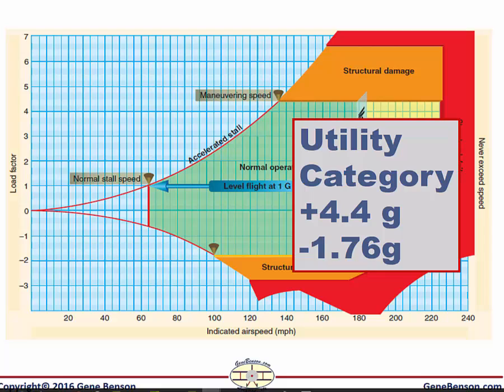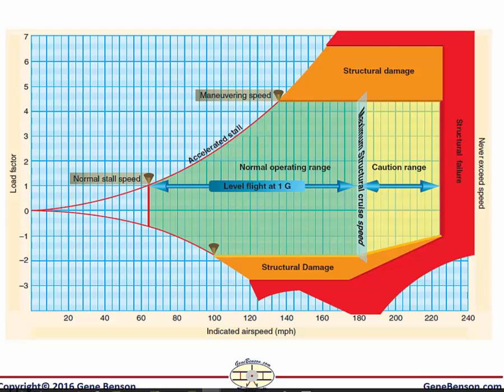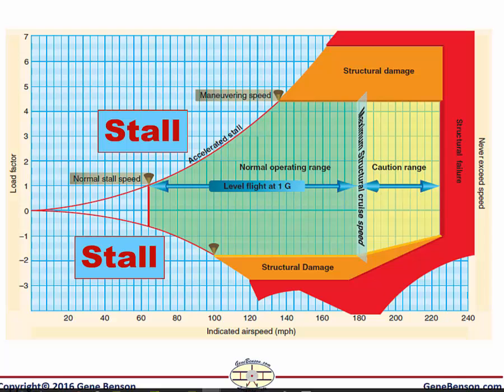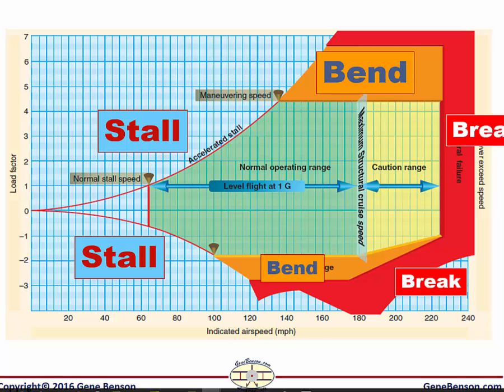Negative G's are what we feel when pushing the nose over aggressively. Exceeding the limit load factors when operating in excess of the maneuvering speed may result in permanent structural damage or even an in-flight breakup. The whole concept behind maneuvering speed is to provide a reference speed below which the airplane will stall before it is structurally damaged. If we are flying below maneuvering speed and experience increased load factors, the airplane will stall before it is damaged. If we are faster than maneuvering speed and exceed 4.4 G's, the airplane might be permanently damaged, or may even suffer a breakup if the ultimate load factor is exceeded.